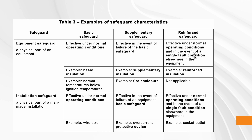Under normal operating conditions and also under single fault conditions, a reinforced safeguard — for example, reinforced insulation — will still be effective. If you cannot have a reinforced safeguard, you might use basic insulation plus supplementary insulation. The standard defines what each of these means. If there is a single fault condition somewhere else, the basic plus supplementary combination might be sufficient to replace the reinforced safeguard.